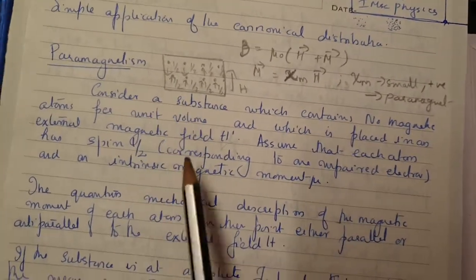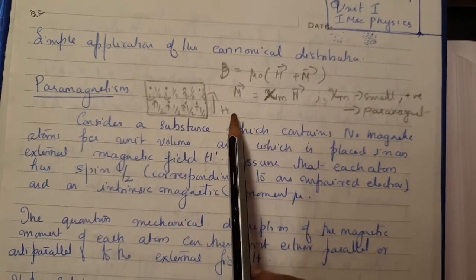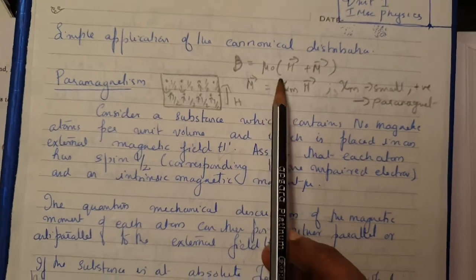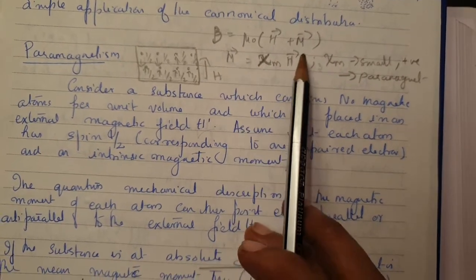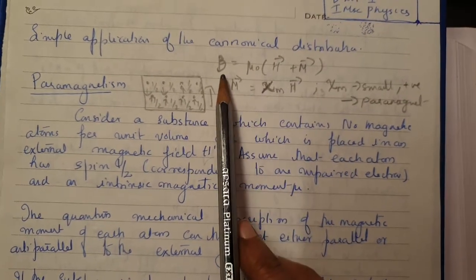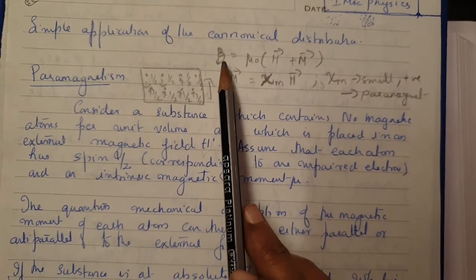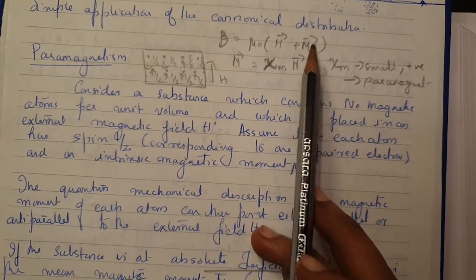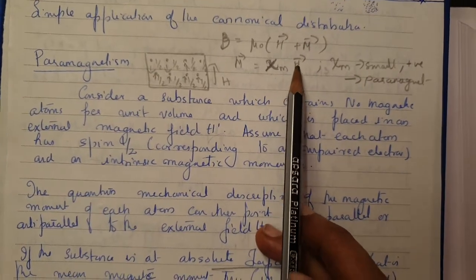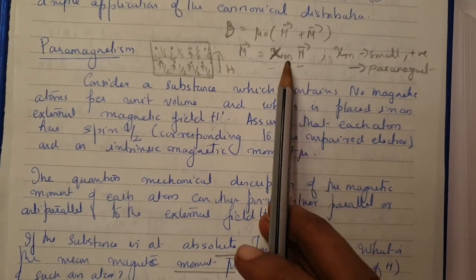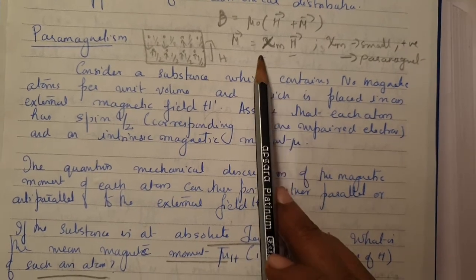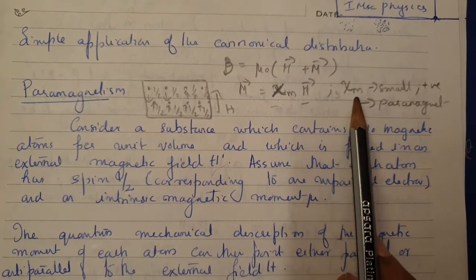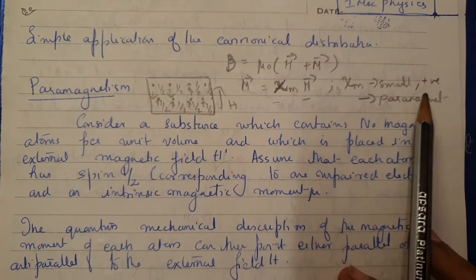Before going into the theory we have to describe a bit about magnetism. You know this equation from your previous classes, maybe in BSc: B = μ0(H + M). B is the field experienced by the material, μ0 is the permeability, H is the applied field, and M is the magnetization. M can be written as χ_M times H, where χ_M is the magnetic susceptibility. Depending on χ_M, there are paramagnetic, ferromagnetic, and diamagnetic materials. When χ_M is small and positive, that means it's a paramagnet.